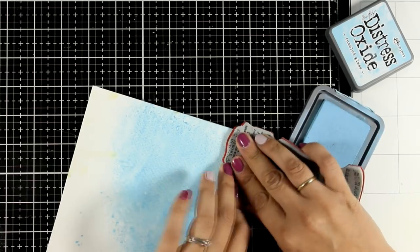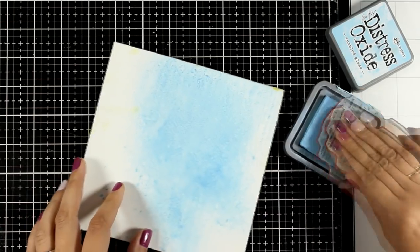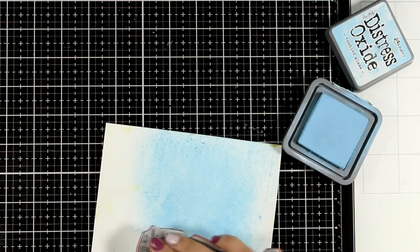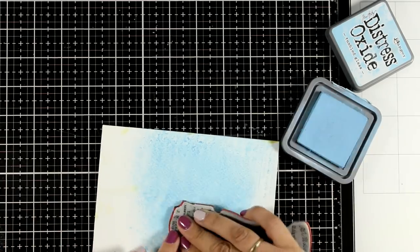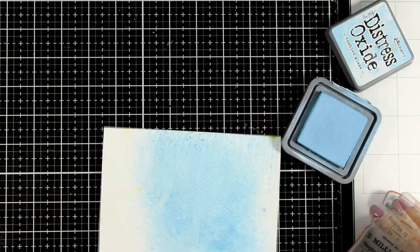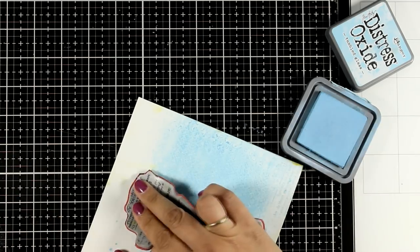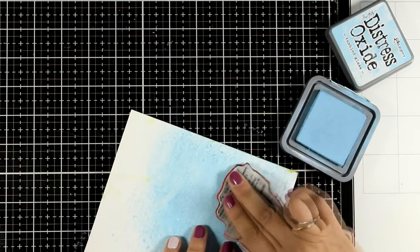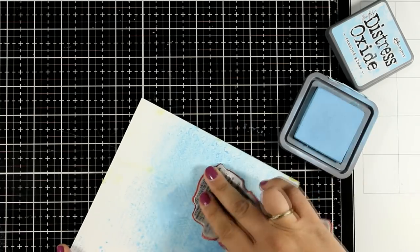Now to keep everything quite subtle but at the same time add some interest in the background, I'm doing some stamping. I'm using the same color of Distress Oxide ink that I used for spraying my background. And I'm just stamping here and there in different areas. It is very subtle but still it's there. It adds a touch of visual texture.